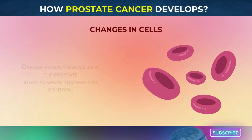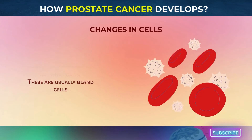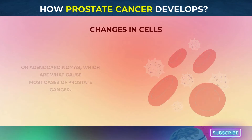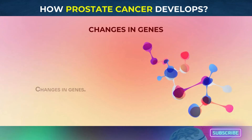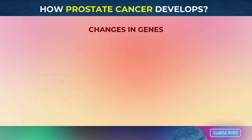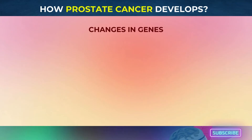Changes in cells: cancer starts when cells in the prostate start to grow too fast for control. These are usually gland cells or adenocarcinomas, which are what cause most cases of prostate cancer. Changes in genes: cancer can start when the DNA of prostate cells gets mutated. People may be born with these changes or get them over the course of their lives.